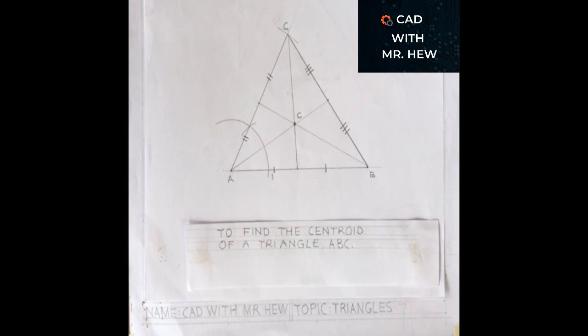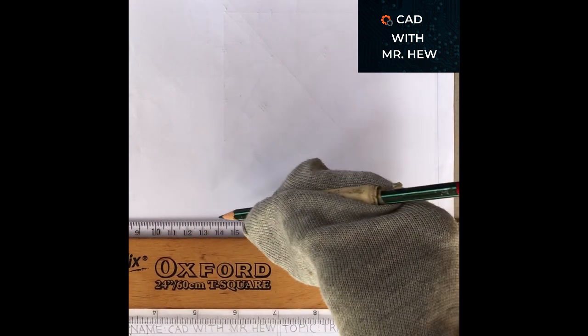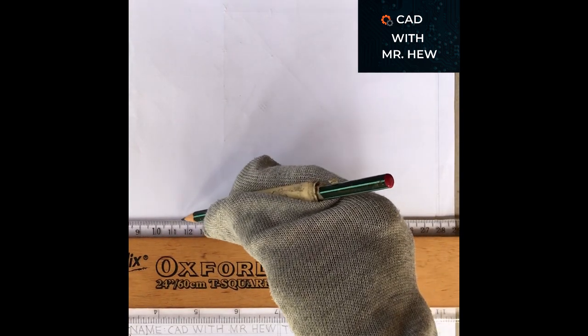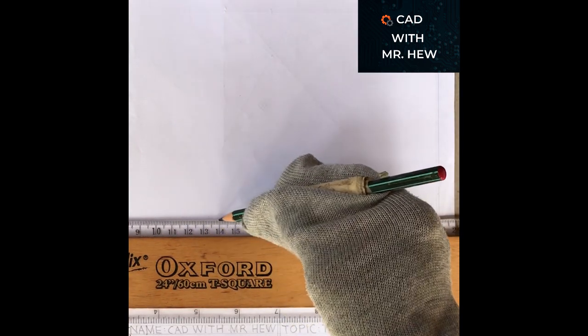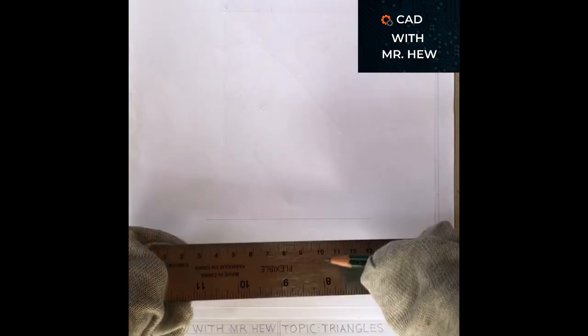We'll be finding the centroid for a given triangle. We'll be constructing a triangle giving the base angle CAB and the length of the side AC.